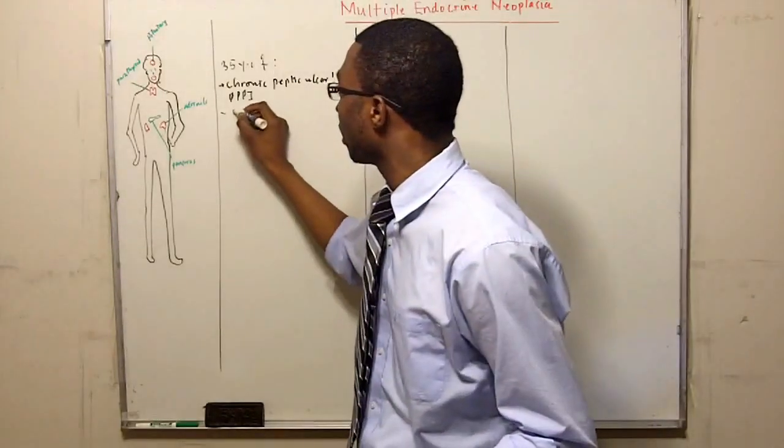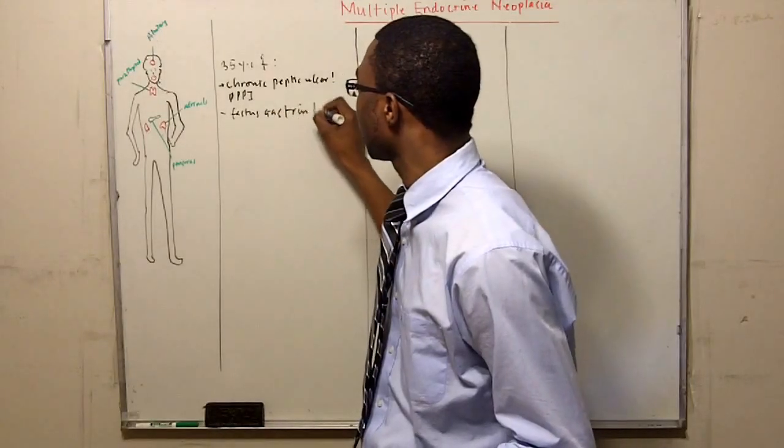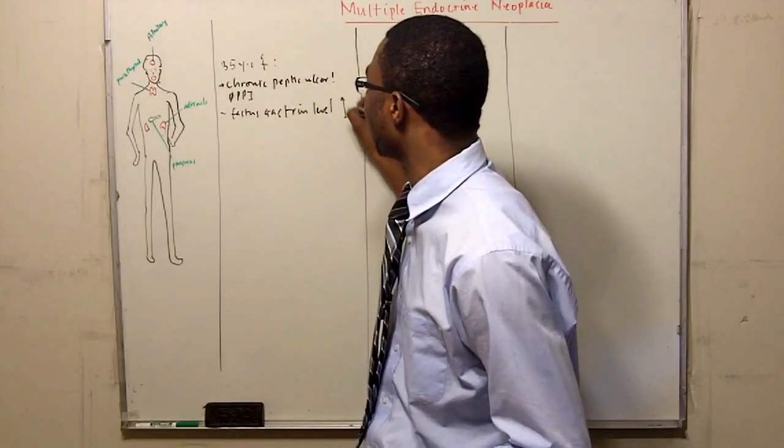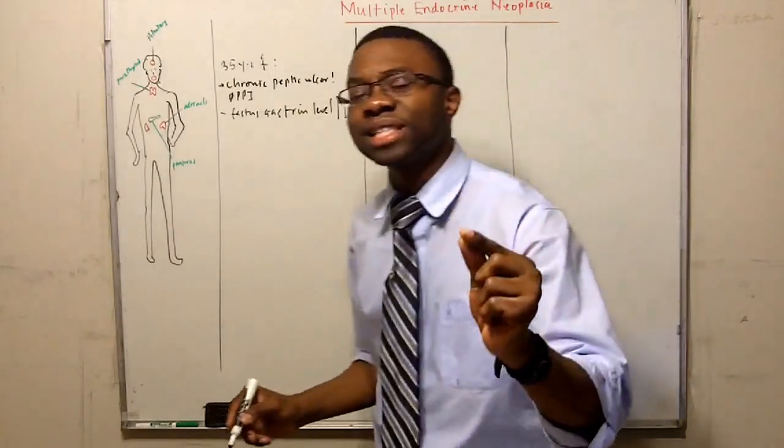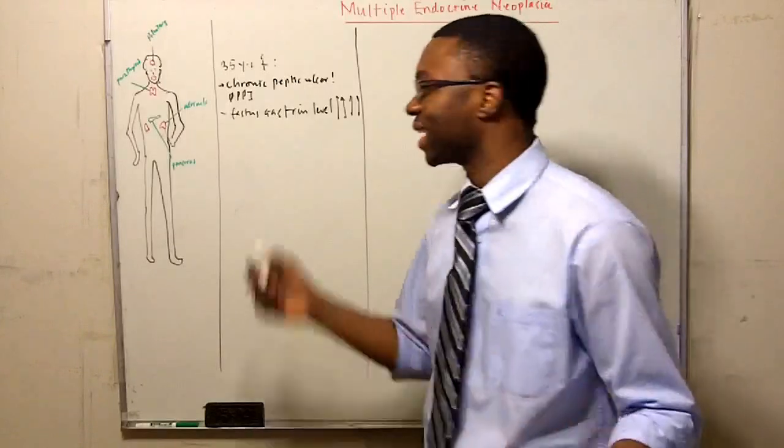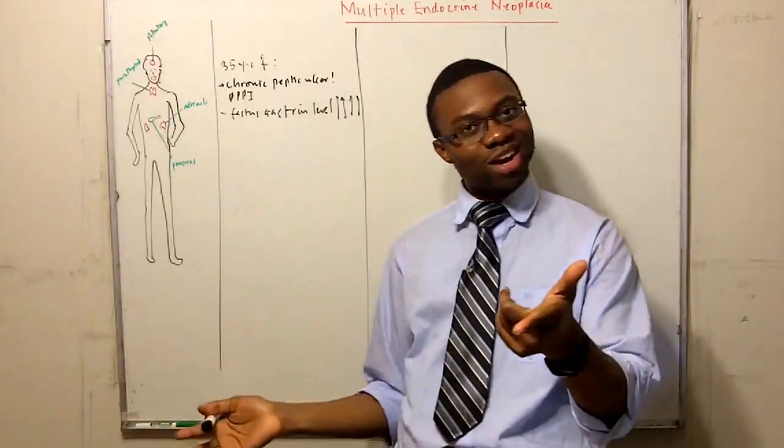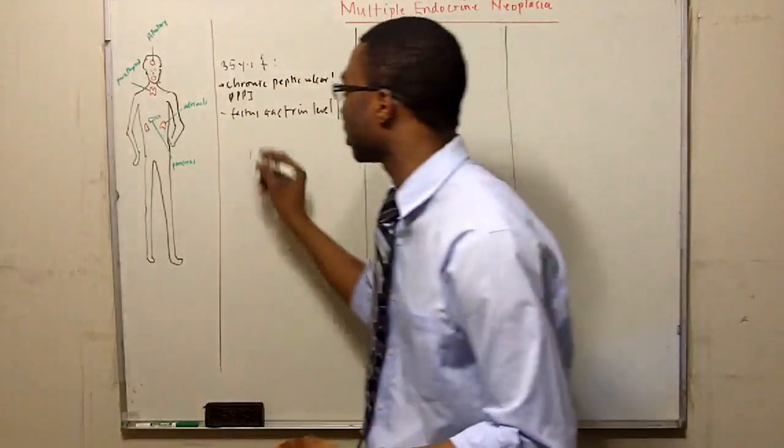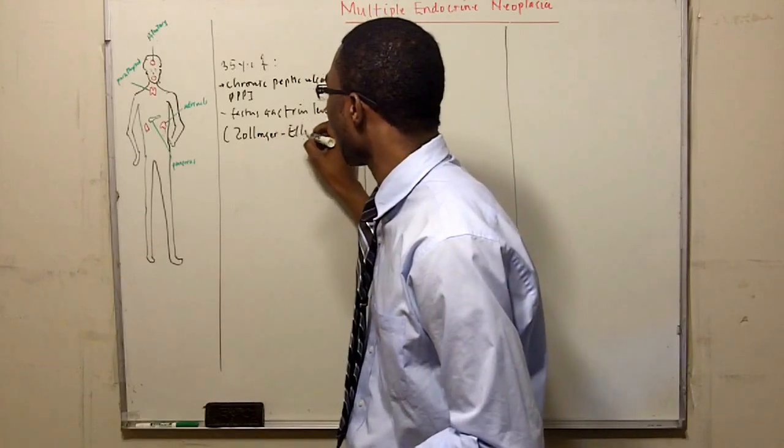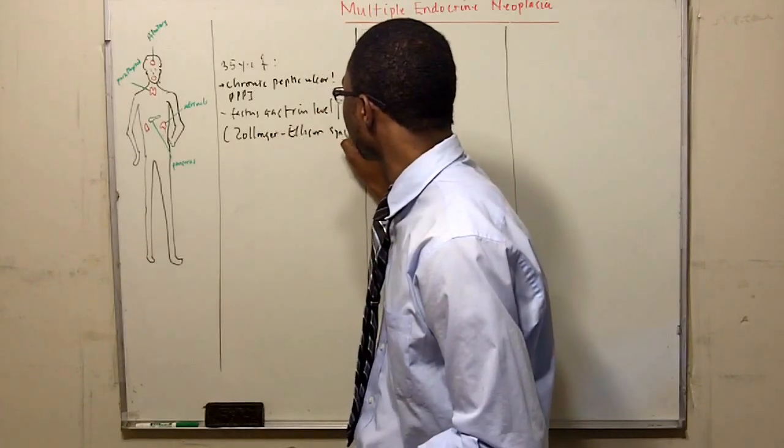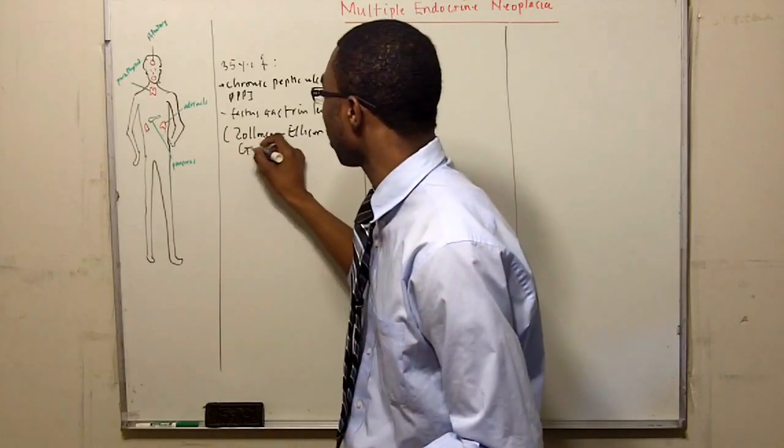I want to order a gastrin level on her. I gave her a fasting gastrin level and it was very, very, very high. We did a secretin inhibitory test and guess what? The gastrin level was still elevated. So we said, 'Voila, guess what honey? You got Zollinger-Ellison syndrome,' which is a gastrinoma.